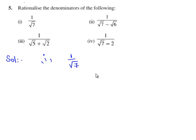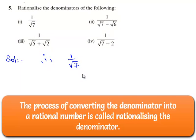The process of converting an expression whose denominator contains a term with a square root into an expression whose denominator is a rational number is called rationalizing the denominator.